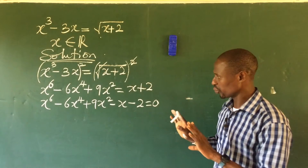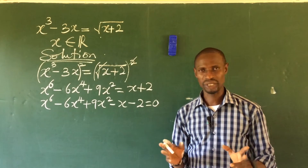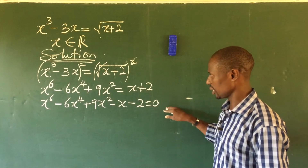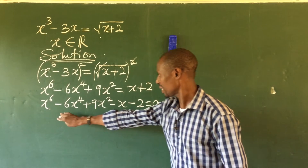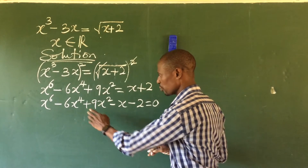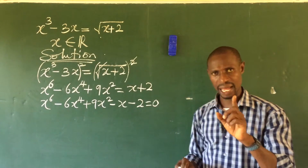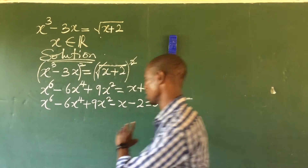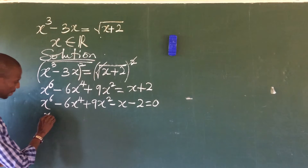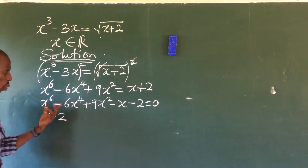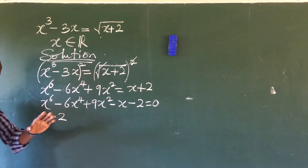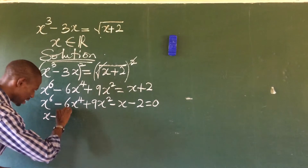To solve this sixth-degree polynomial equation, we use the trial-and-error method. Trying positive one gives us a non-zero result; trying negative one does not work; trying negative two does not work either. But trying positive two gives us zero. So using trial and error, we find that x minus two equals zero is one factor of this sixth-degree polynomial.